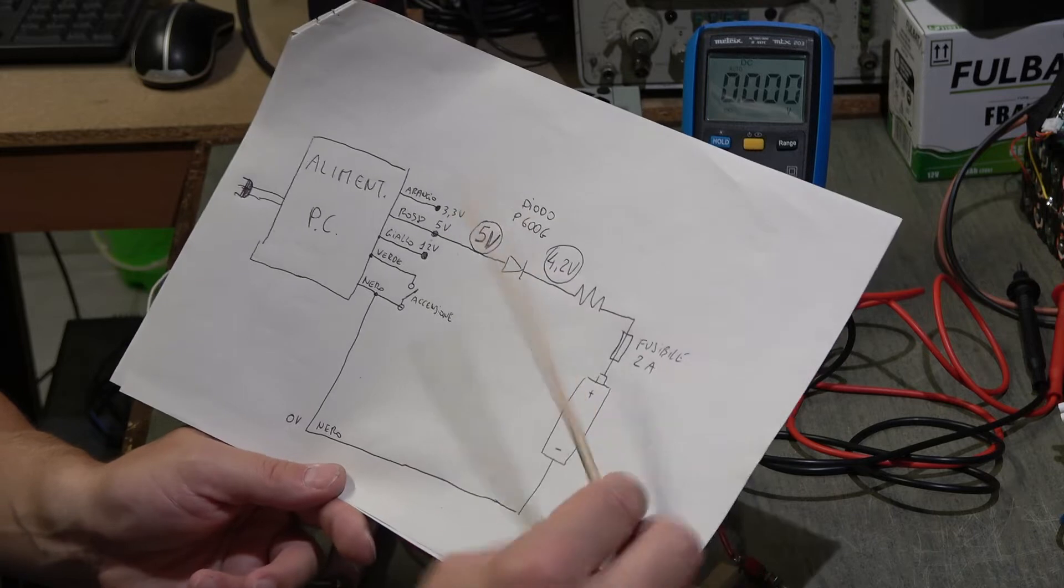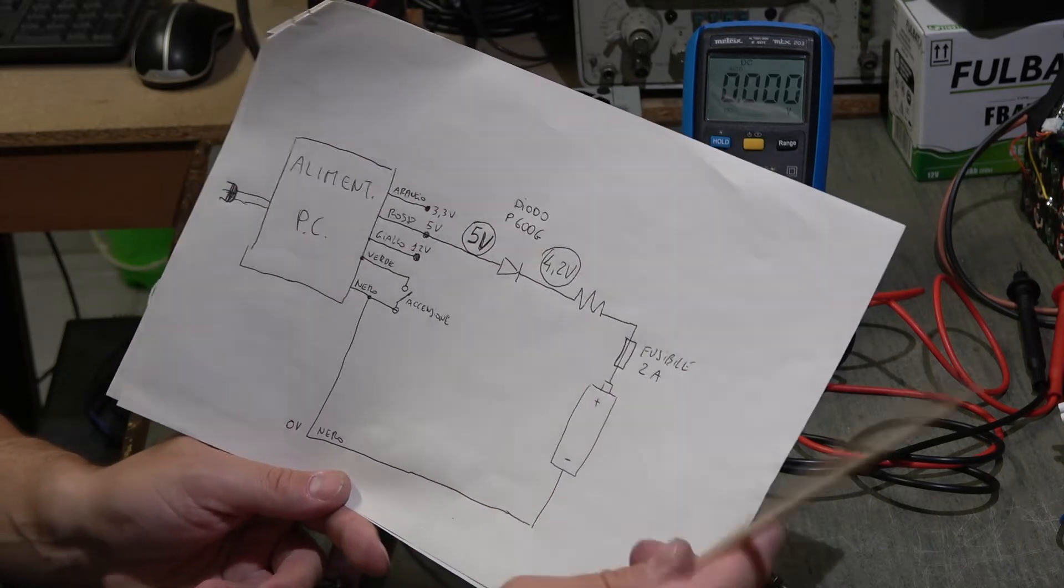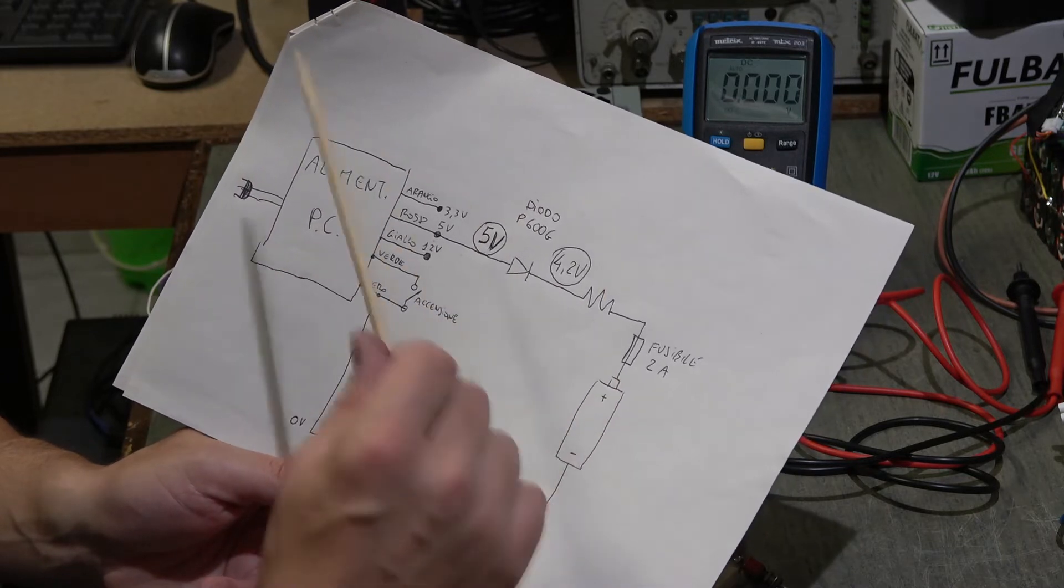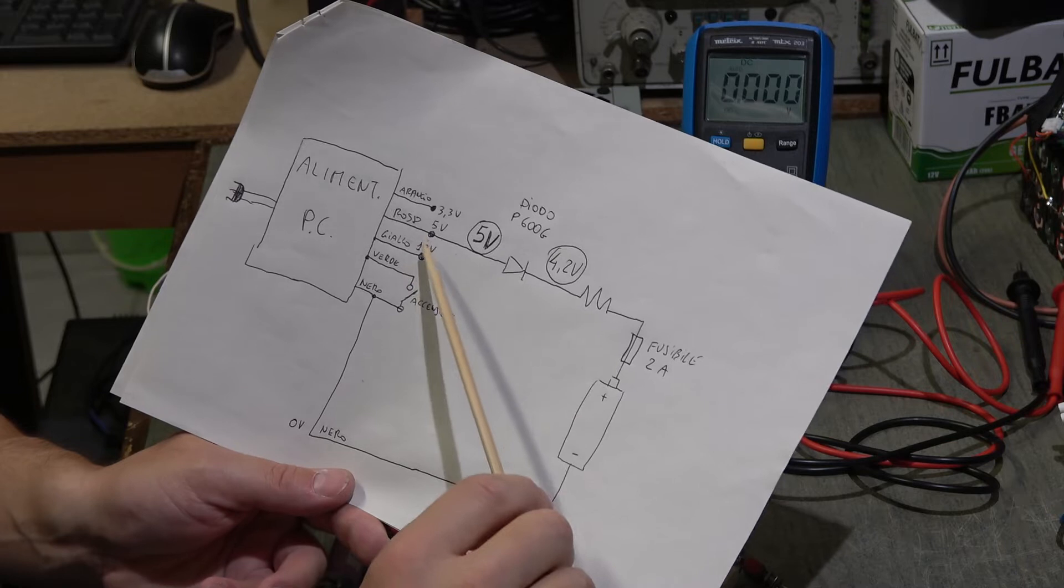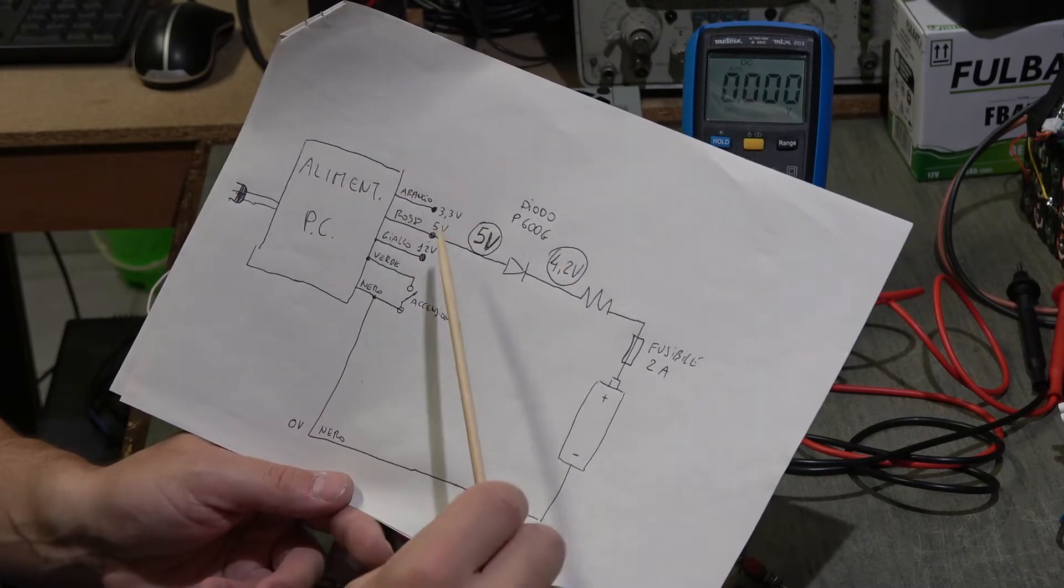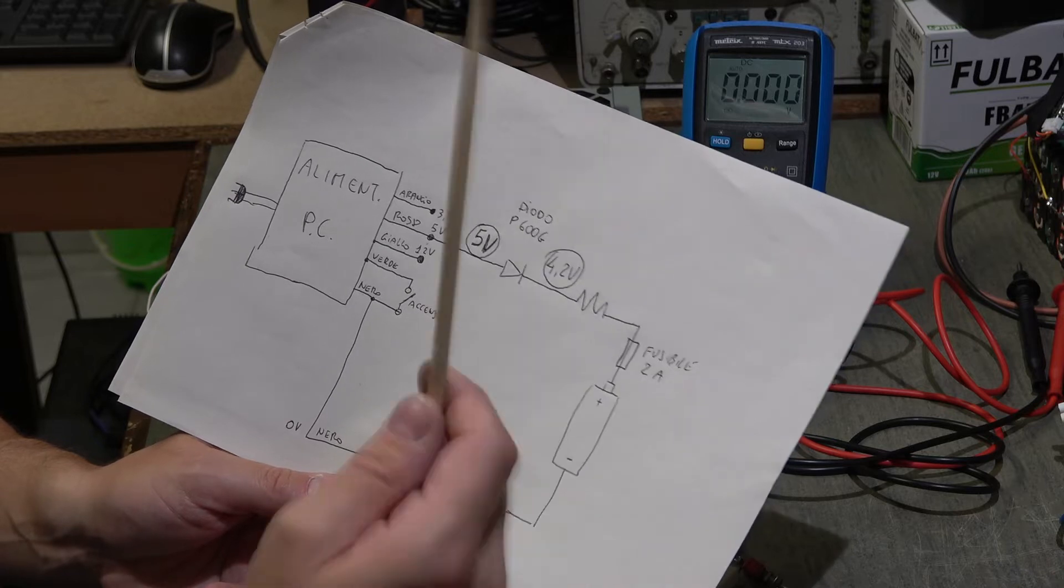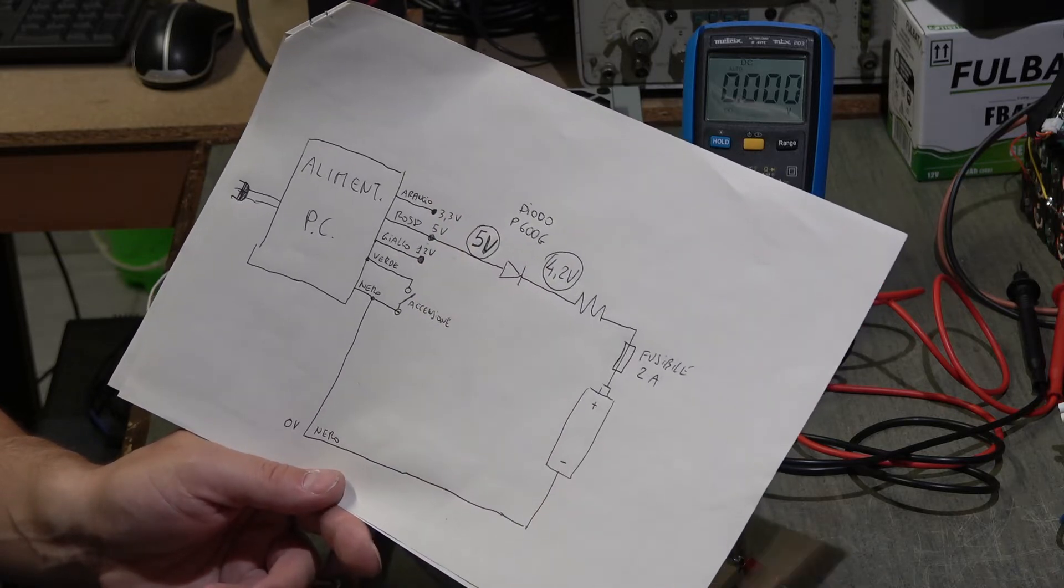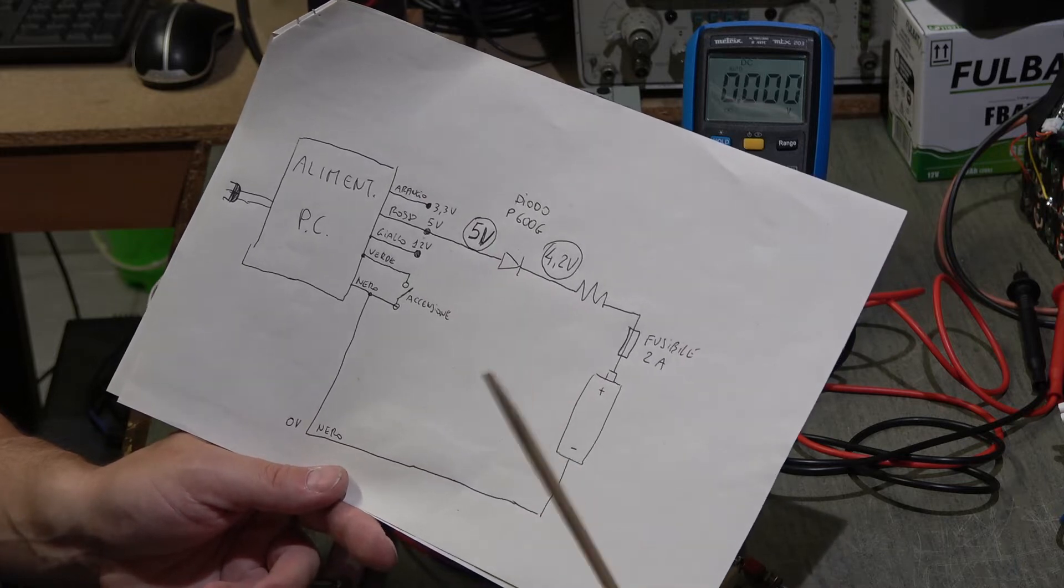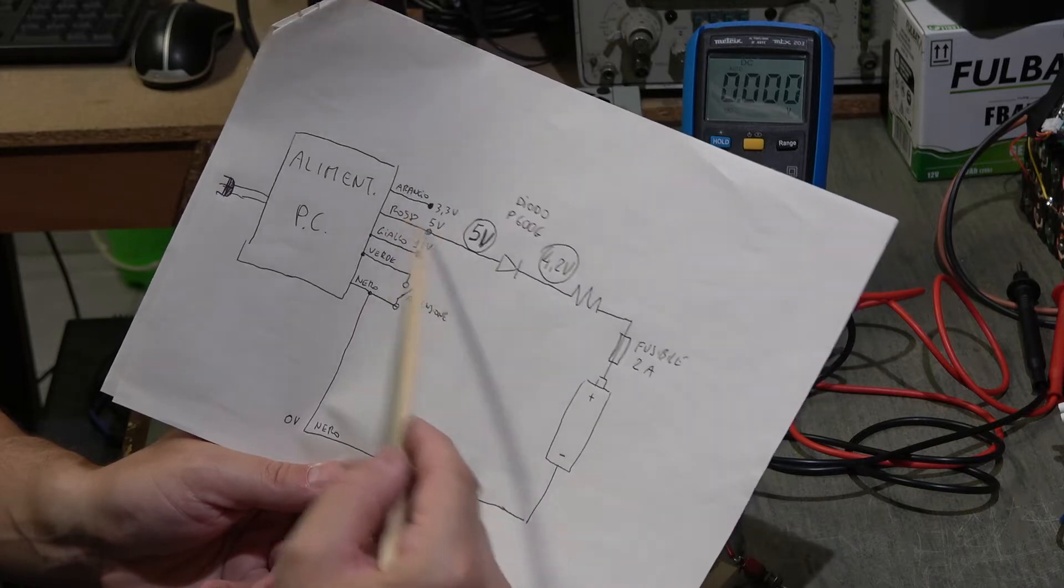Instead, the tensions that we use - the 12V, 5V, and 3.3V - have nice amperage. You should look at your power supply because there is written maybe 12V × 15 ampere, 5 volt 20 ampere, 3.3 volt 12 ampere. You see the maximum current that the power supply can reach. Then we start from the 5 volts of the generator.